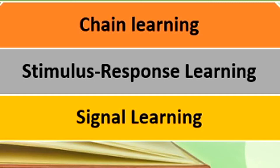A child cannot yet say mama, papa, food, water, or milk, but they signal needs and learn signals from elders — that is signal learning. This grows to the stimulus-response phase, where there is a stimulus and the learner shows a response. If you study stimulus-response theory, especially classical conditioning, it talks about the S-R bond — a bonding between stimulus and response that grows stronger with practice. That is stimulus-response learning, and it moves to chain learning.